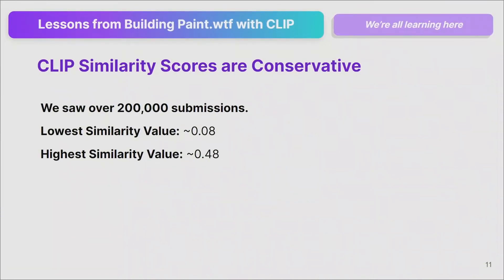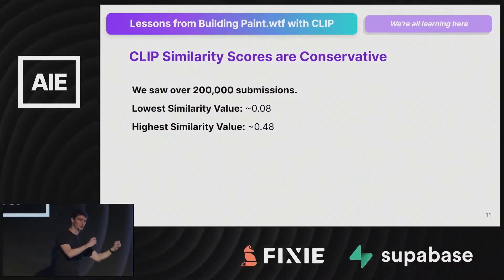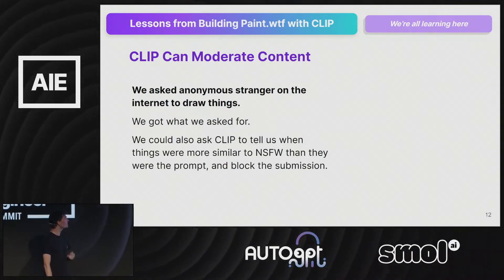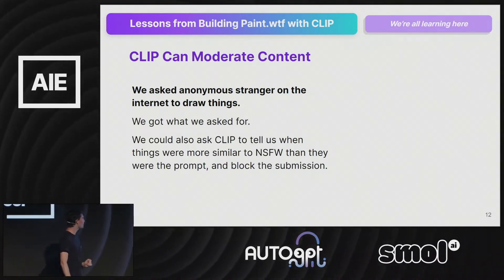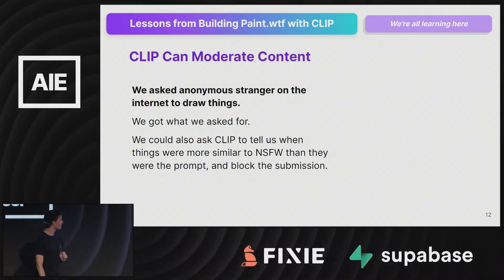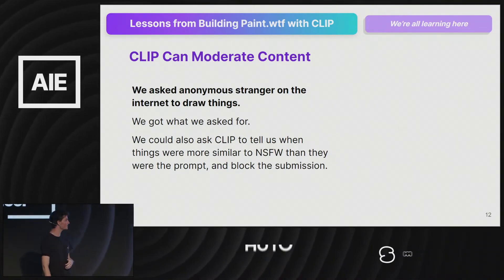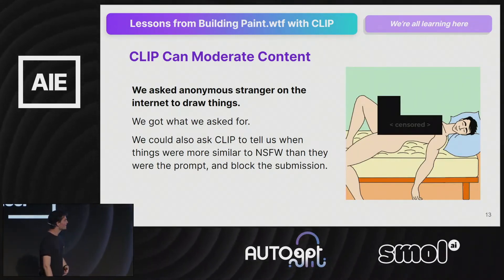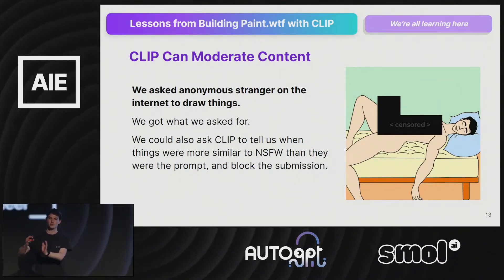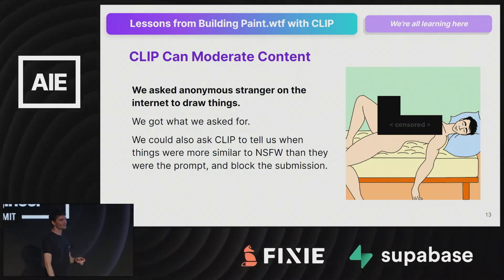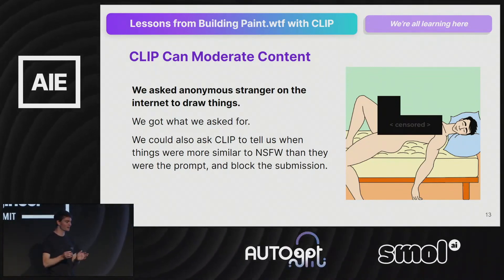CLIP similarities are very conservative. Over 200,000 submissions, the lowest similarity was about 8% and the highest was 48%. That's why I had the scaling function in render to map the lowest value to zero and the highest to 100. CLIP can also moderate content. When anonymous strangers on the internet draw things, you get what you ask for — sometimes people would ignore the prompt and draw NSFW content. We could ask CLIP to tell us when things were not safe for work, and if the image was more similar to NSFW content than to the prompt, block it. Not hot dog — it worked pretty well.